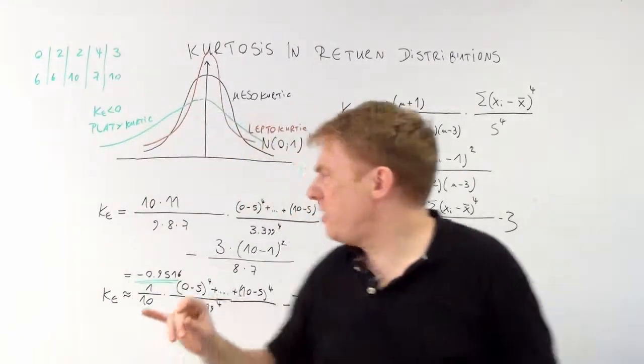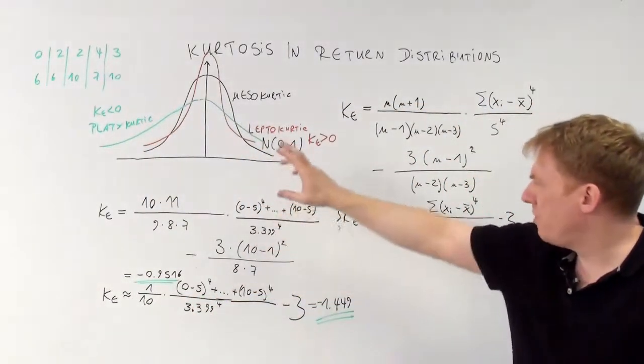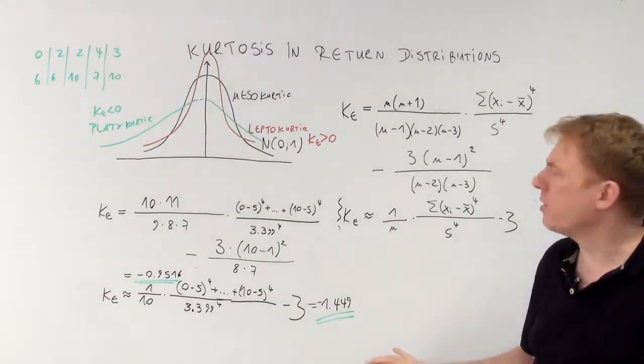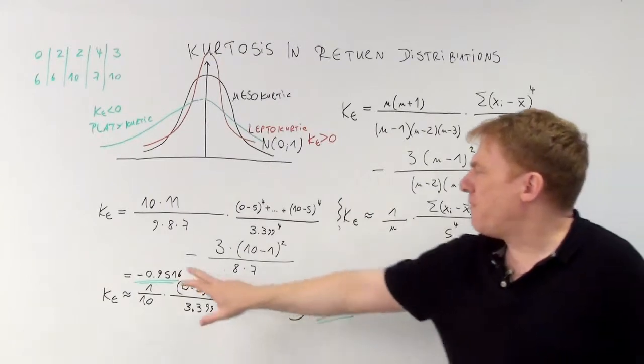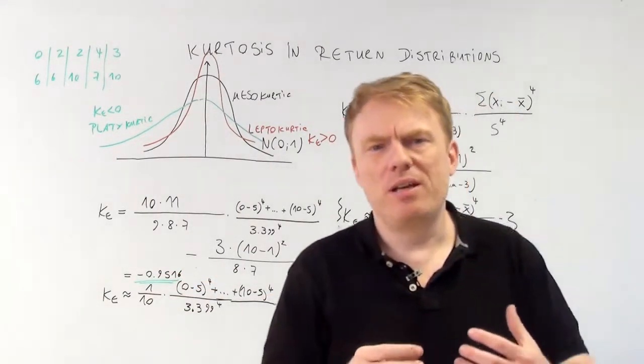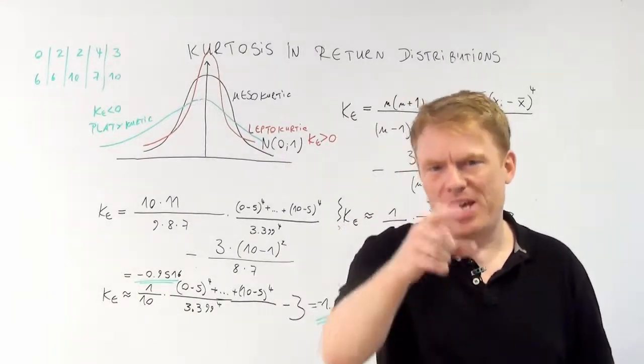I just computed it for this data too, and we get the result of minus 1.449, which is not that far away from this number. Since the sample size was only 10, it was not very large. Thank you for watching.